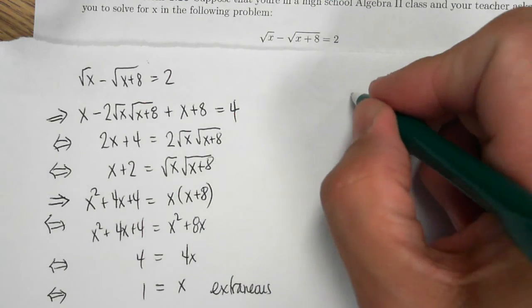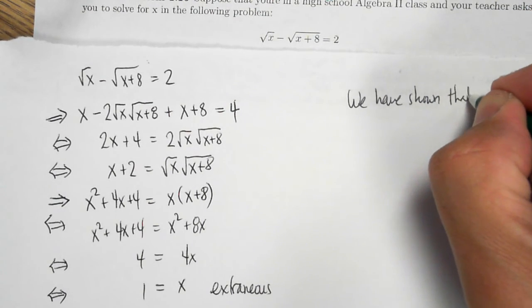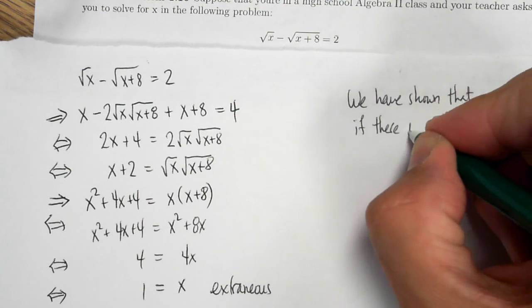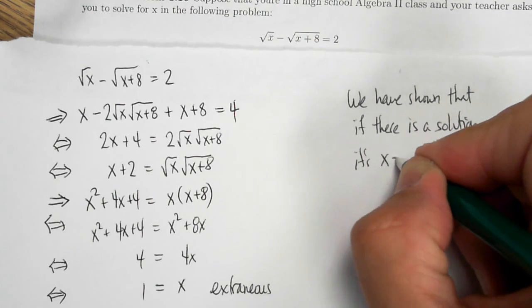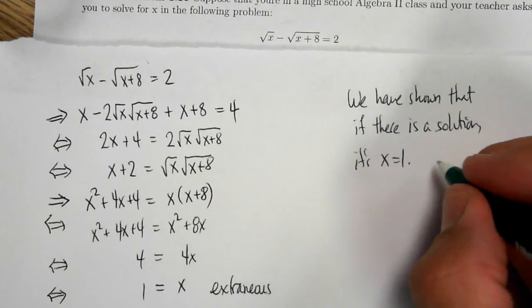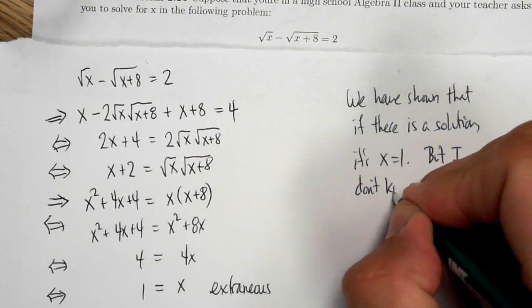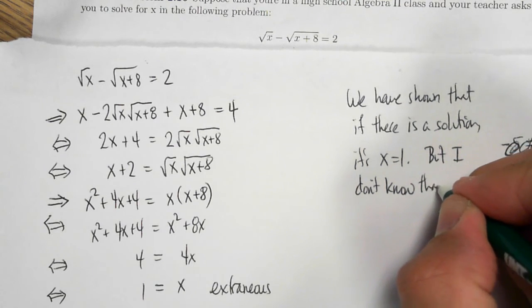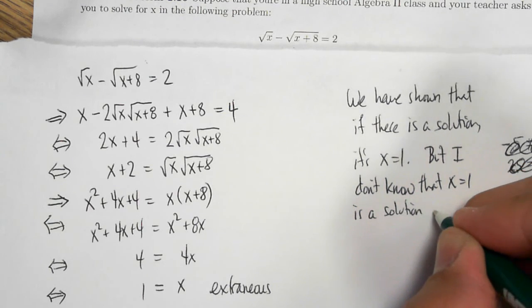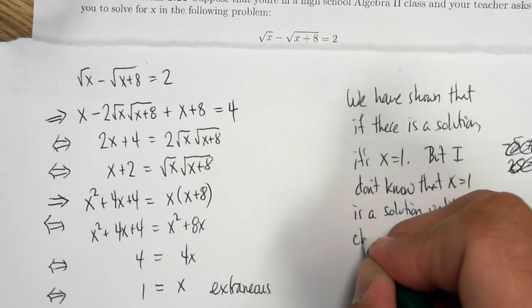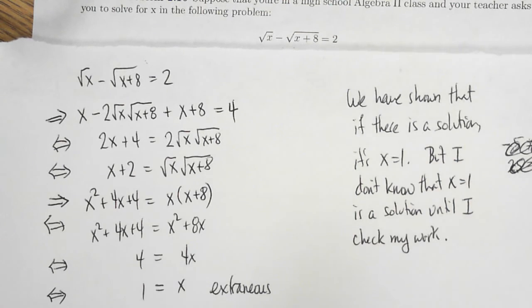So we have shown that if there is a solution, it's x equals 1. That's the only possible solution. But I don't know that x equals 1 is a solution until I check my work. Until I plug into the original equation and see if it actually works.